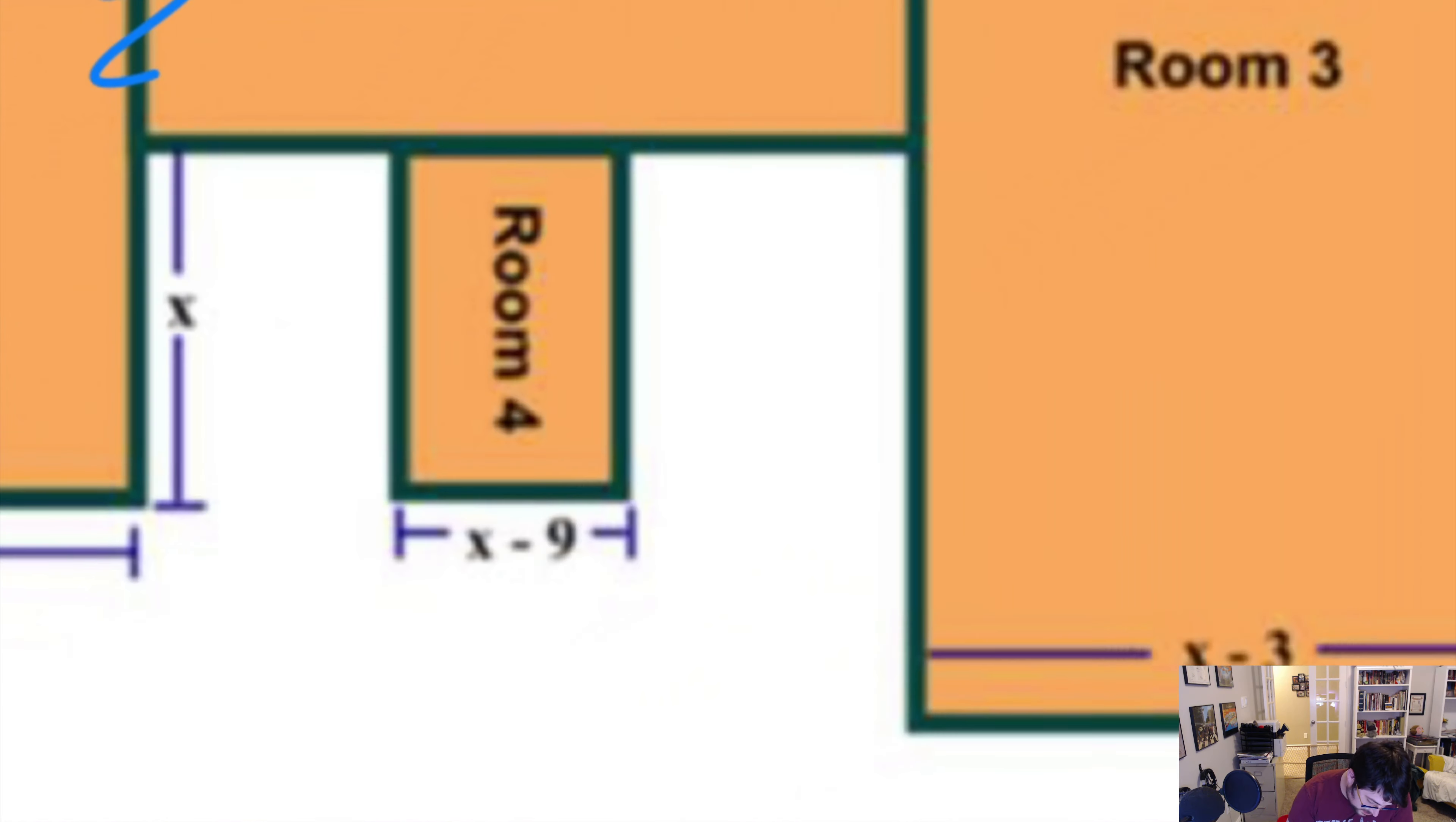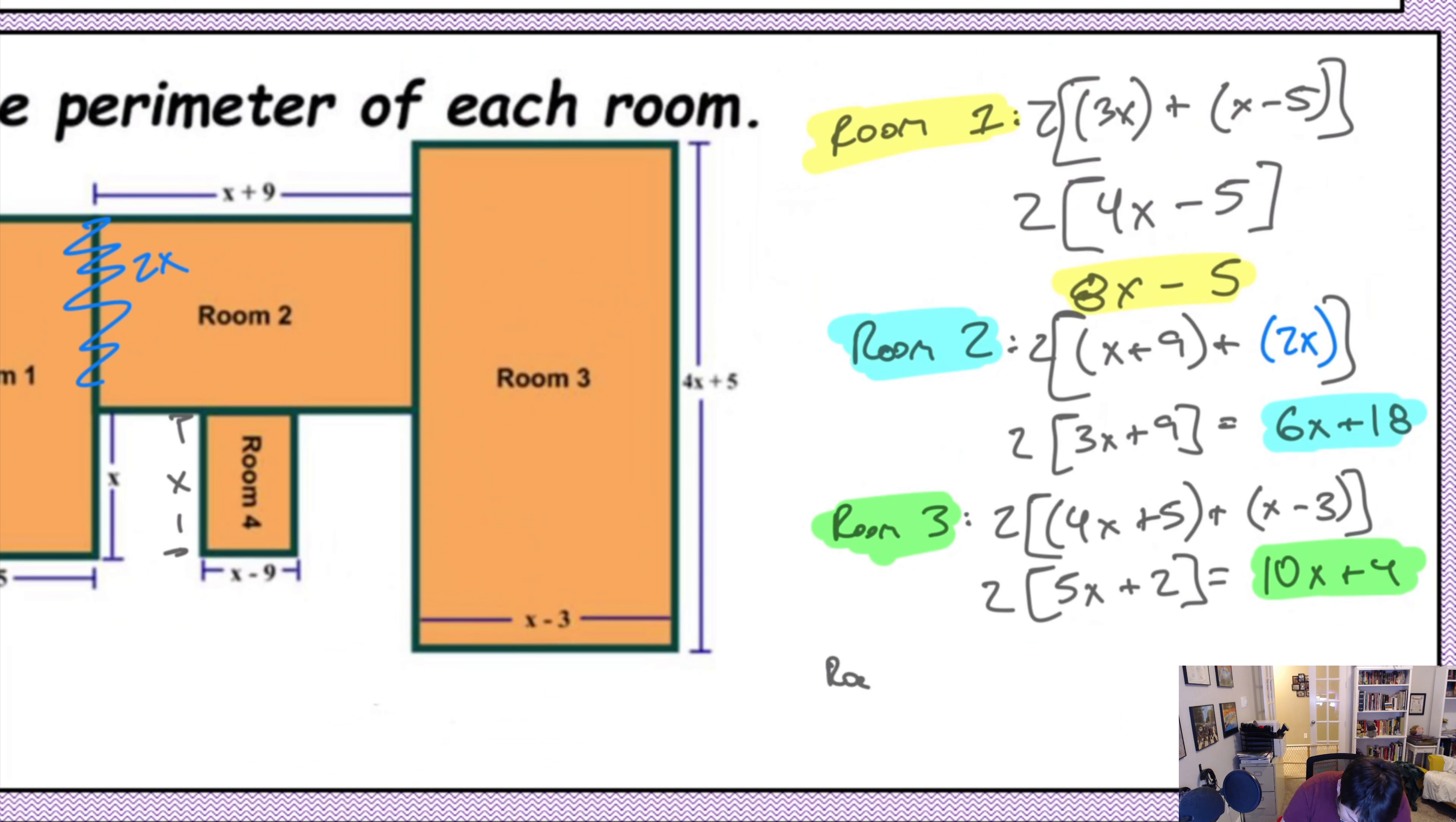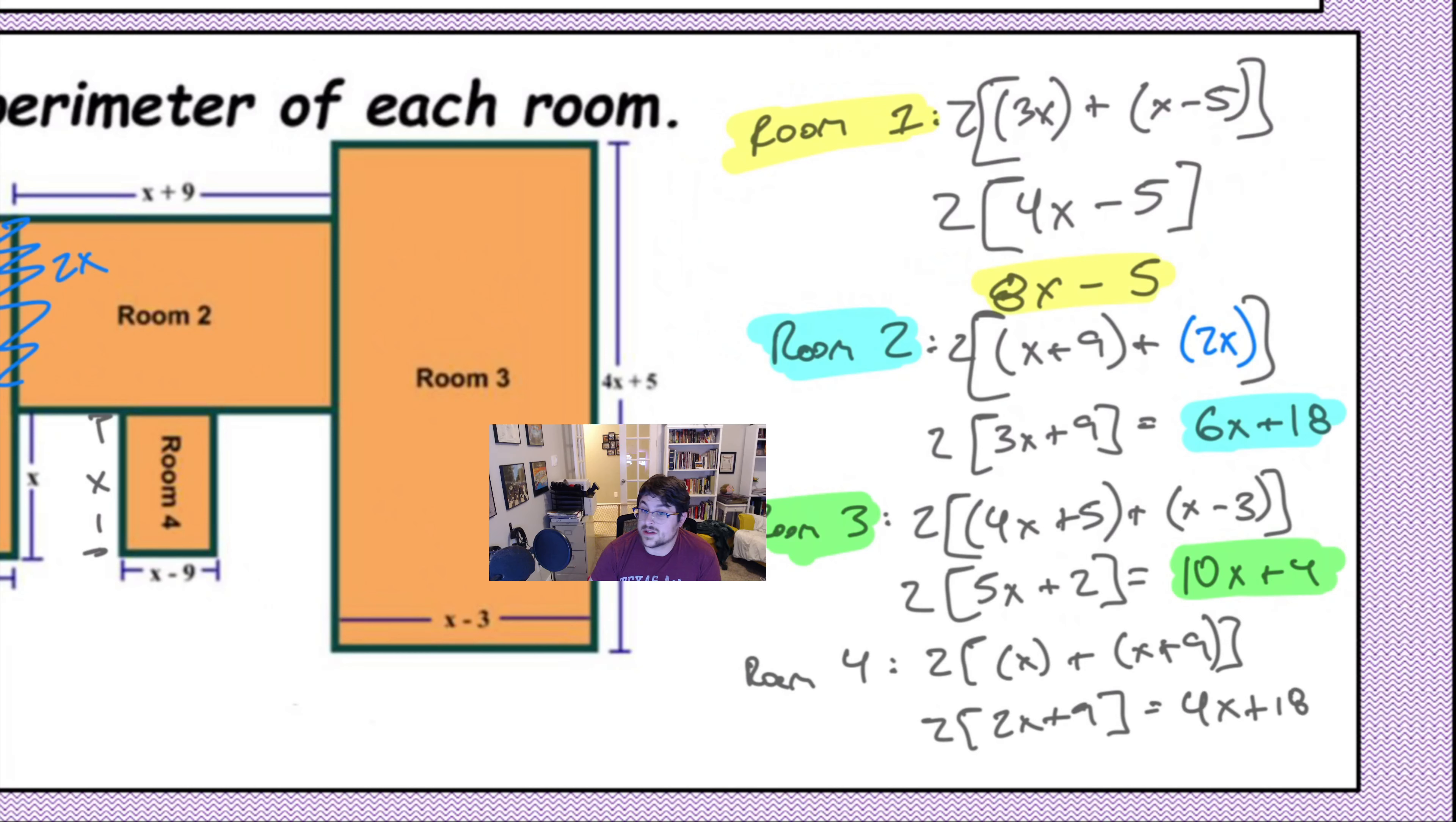All right. Finally, room 4. Now, room 4 doesn't say the side here, but we can assume it's x since it matches the same dimensions as the x we see over here. So, we're going to say for room 4. It's 2 times x plus x plus 9. So, in other words, it's 2 times 2x plus 9. Which my face is getting in the way of. So, we're saying that's 4x plus 18.